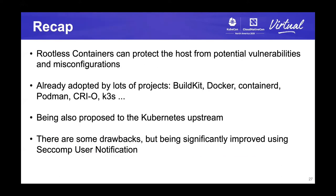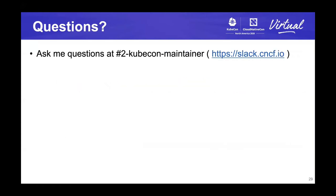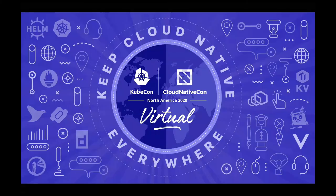Let's recap my talk. Rootless containers can protect the host from potential vulnerabilities and misconfigurations. It's already adopted by lots of projects such as BuildKit, Docker, containerd, Podman, CRI-O, and K3S. It's also being proposed to the Kubernetes upstream. There are some drawbacks, but these drawbacks are being significantly improved using seccomp user notification. You can find resources at https://rootlesscontain.rs. If you have questions, feel free to ask me at CNCF Slack. That's all. Thanks.